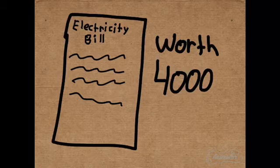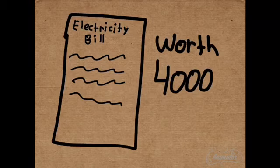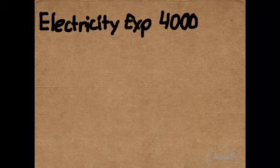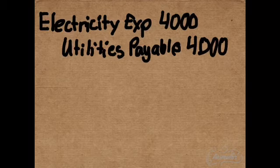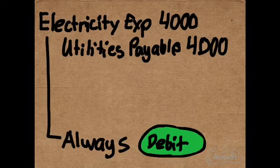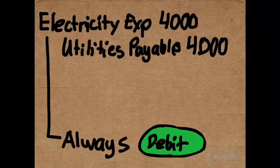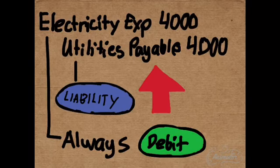After December 25th, Mr. Santa also received his electricity bill amounting to 4,000. The journal entry for that is a debit to Electricity Expense of 4,000 and a credit to Utilities Payable also for 4,000. Remember that an expense account is always debited once it is incurred, and we credit Utilities Payable because it has not yet been paid, so Mr. Santa's liability increases.